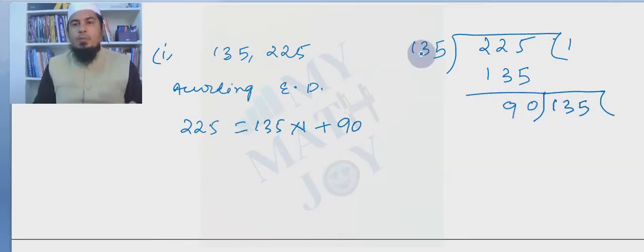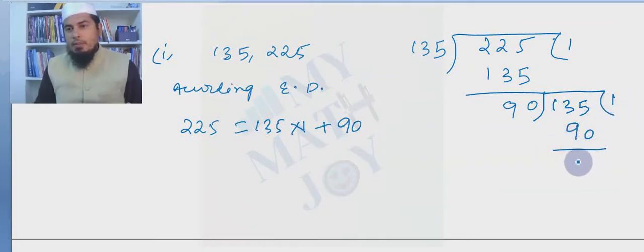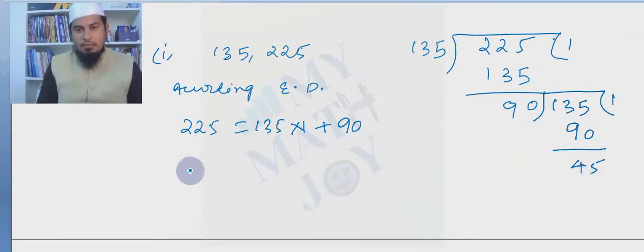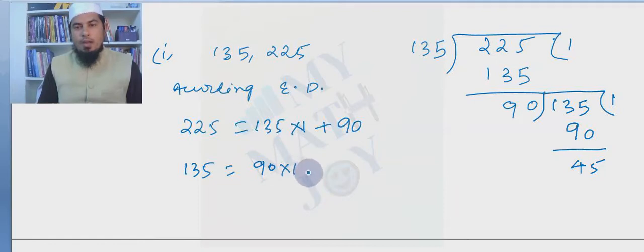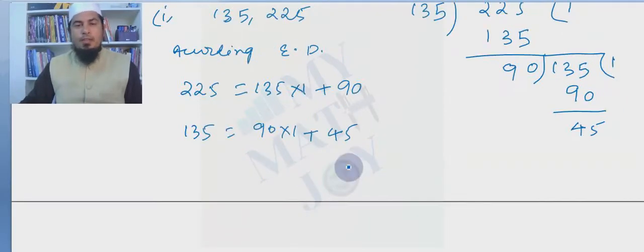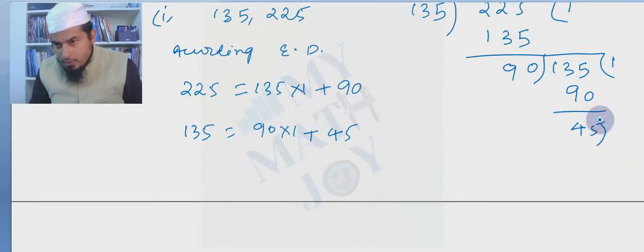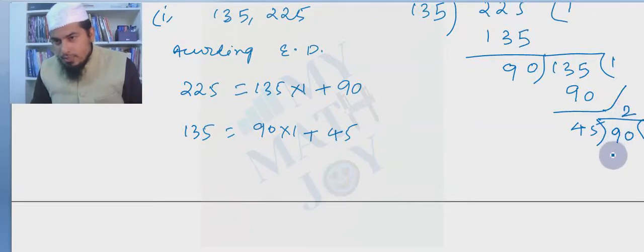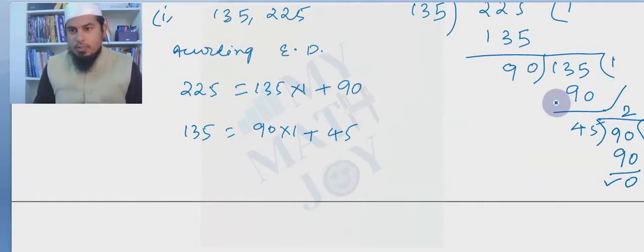Dividing 135 by 90: 90 times 1 is 90, remainder is 45. Again a remainder came, so we write the statement: 135 = 90 × 1 + 45. HCF is still not found, so we divide again — now 90 divided by 45. 45 times 2 is exactly 90, giving remainder 0.